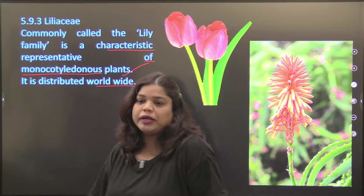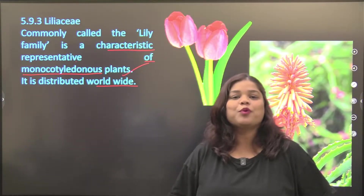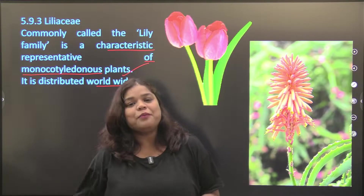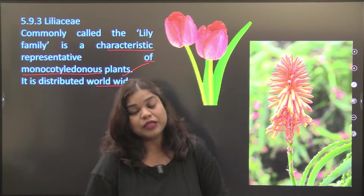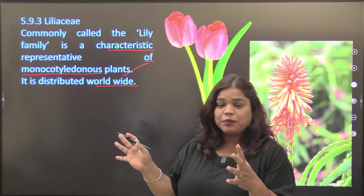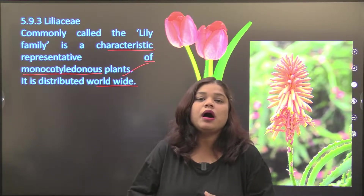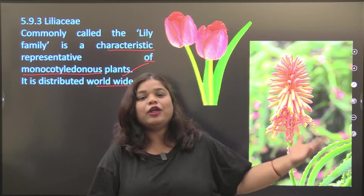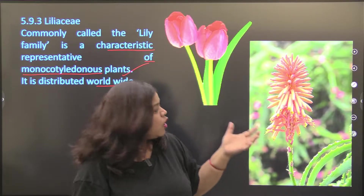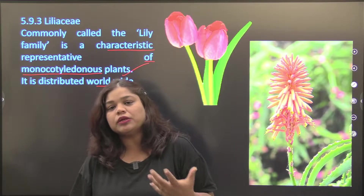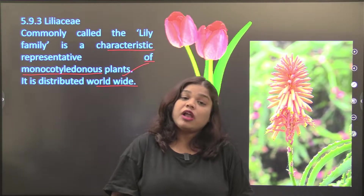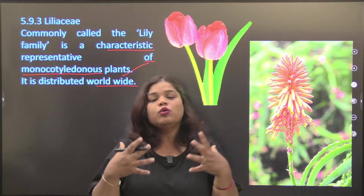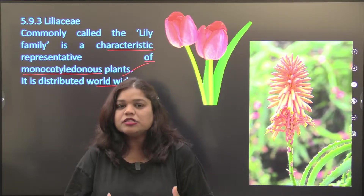Liliaceae is distributed worldwide. Every place you will get lily flowers, lily-like family flowers. Tulips — you must have seen them in Switzerland, but in India now a lot of people are also growing tulips. Aloe vera is grown at home. There are different colors, and there will also be many flowers to see.